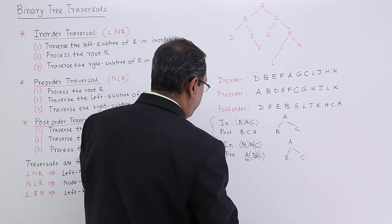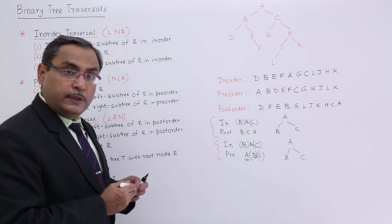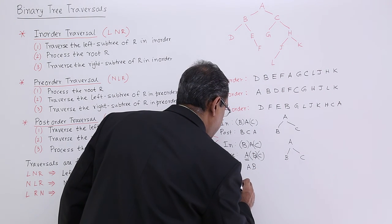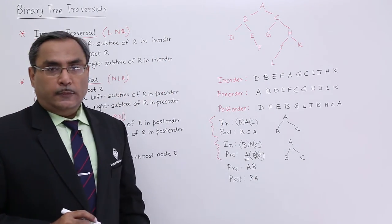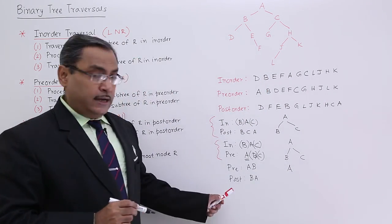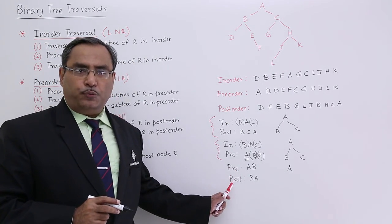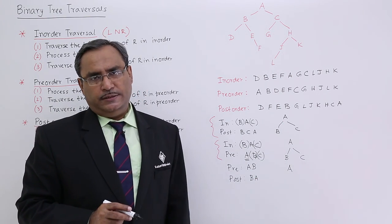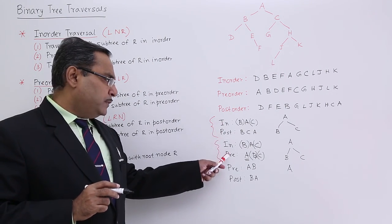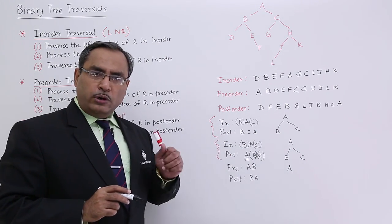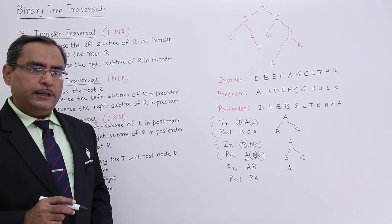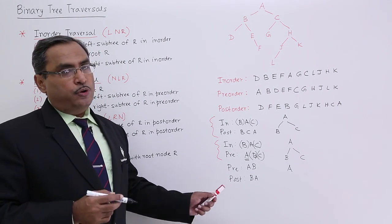Now the last combination: preorder and postorder. Suppose preorder traversal is A, B and postorder traversal is B, A. From both cases A is the root. But there is ambiguity — I cannot tell from preorder and postorder whether B is the left child or the right child. That is the difficulty with pre and post. If inorder and any one other traversal are given, I can form the tree uniquely. But with only preorder and postorder, ambiguity may remain and we may not form the tree uniquely.